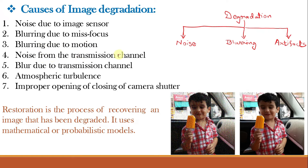Noise from the transmission channel may get added to the image causing undesired artifacts, and blur due to the transmission channel may also occur. Degradation can also result from atmospheric turbulence — for example, capturing images in bad weather conditions — and from improper opening or closing of the camera shutter. Due to all these effects, image degradation may occur and we want to restore the image.